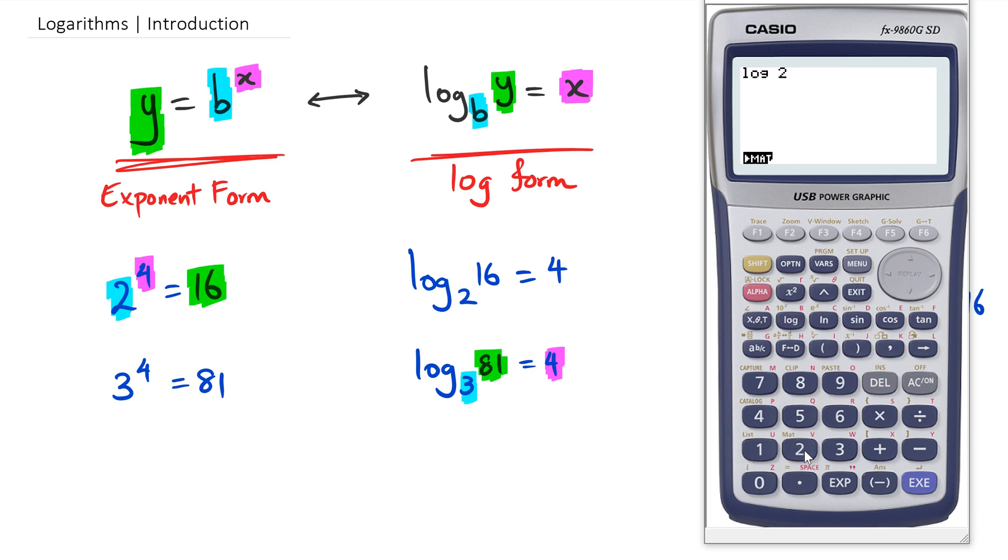If I press log of 100, notice there's no base in the calculator. It just says log and 100, it doesn't have any base. But when I press equals, I get the answer 2. That's because in the calculator, the calculator can only do base 10.